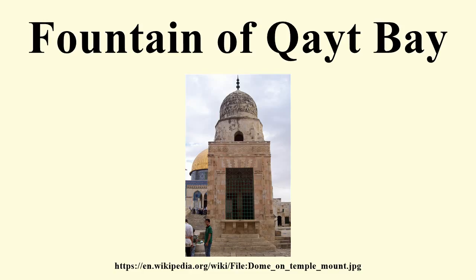Before the establishment of the British Mandate in Palestine, most fountains in the Temple Mount were supplied with water from the main channel from Solomon's Pools at the Chain Gate. During the British Mandate period, the fountain became more dependent on rainwater and springs. At this time, water was collected in the reservoir beneath the building and then pulled up to the fountain itself.